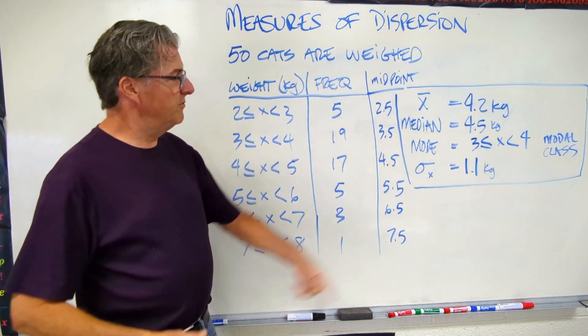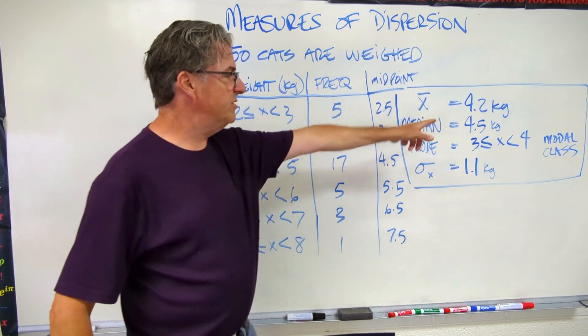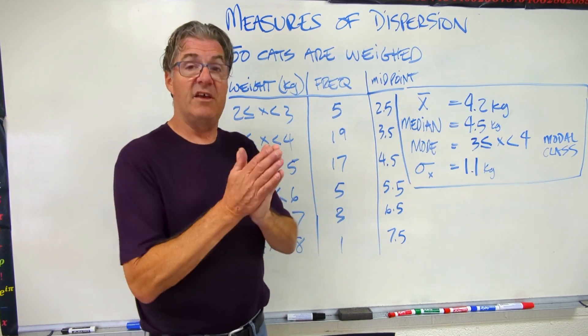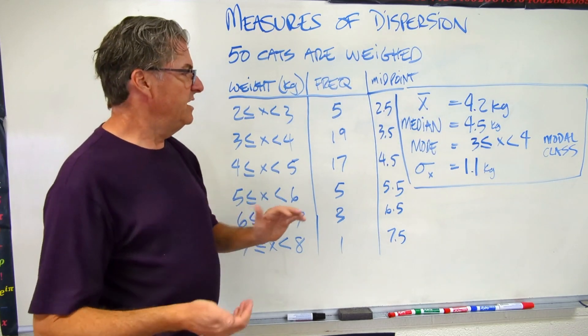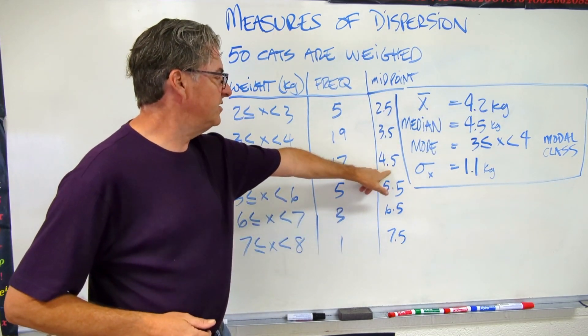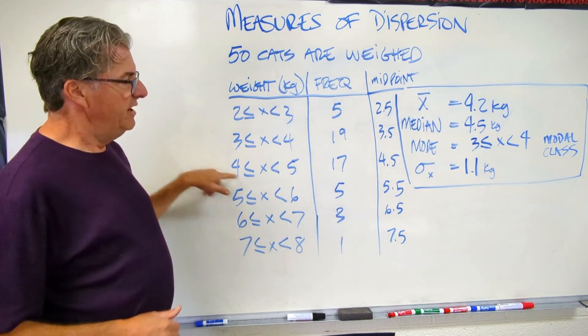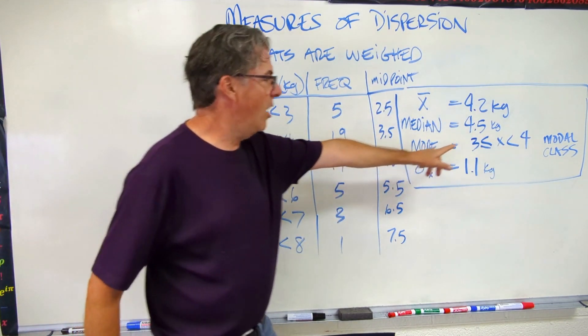For me, I get my average, my mean, is 4.2 kilograms. My median, that's the middle value, the value for which half the data is less than and half the data is more than, is going to be 4.5 kilograms. That's my median, which is this weight class. And then finally, or not finally, but my mode is going to be a weight class.